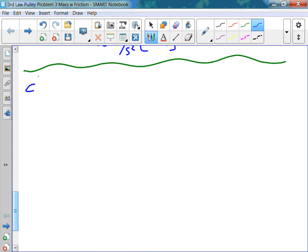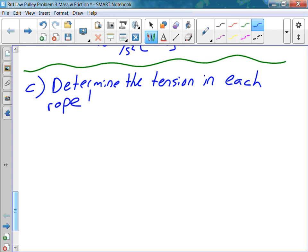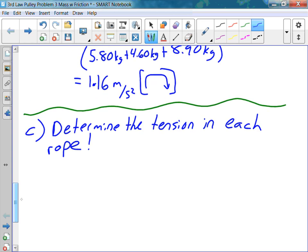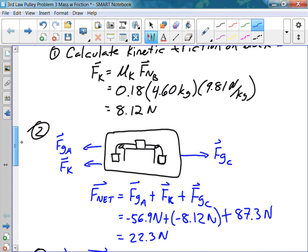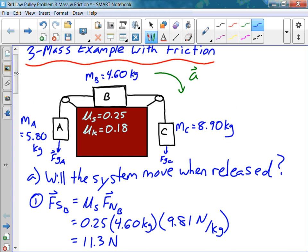Okay, part C. Determine the tension of each of the ropes. If I go back up to the top here, let's call this T1 for tension 1, and we'll call this one tension 2.